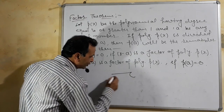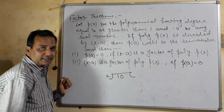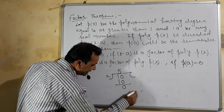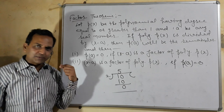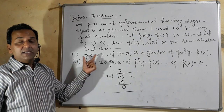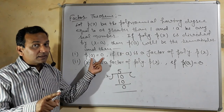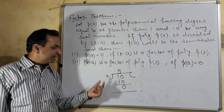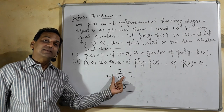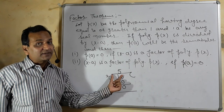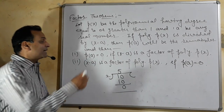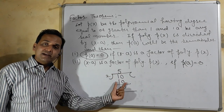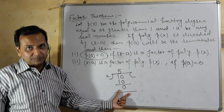Understand this through an example. Suppose I divide 10 by 2 — it gives 5, remainder 0. Now understand the first statement: P(a) = 0 when the divisor x minus a is a factor. You already know that 2 is a factor of 10, so 100% the remainder will be 0. As you can see, 2 times 5 gives 10, and remainder becomes 0.